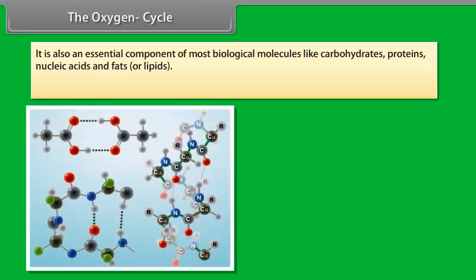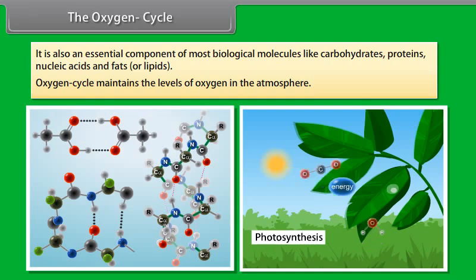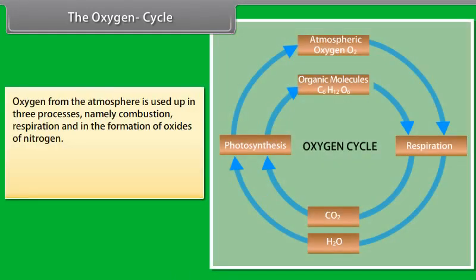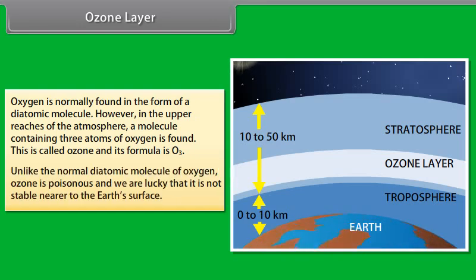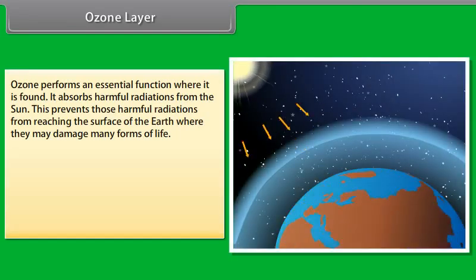The oxygen cycle. Oxygen is found in the elemental form in the atmosphere to the extent of 21%. In the air it is found also in the form of carbon dioxide. In the earth's crust it is found as oxides of most metals and silicon and also as carbonate, sulfate, nitrate and other minerals. It is also an essential component of most biological molecules like carbohydrates, proteins, nucleic acids and fats or lipids. Oxygen cycle maintains the levels of oxygen in the atmosphere. Oxygen from the atmosphere is used up in three processes namely combustion, respiration and in the formation of oxides of nitrogen. Oxygen is returned to the atmosphere in only one major process that is photosynthesis.